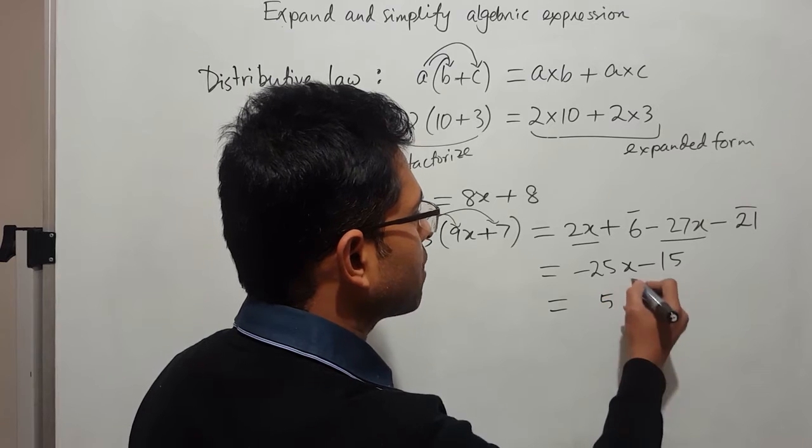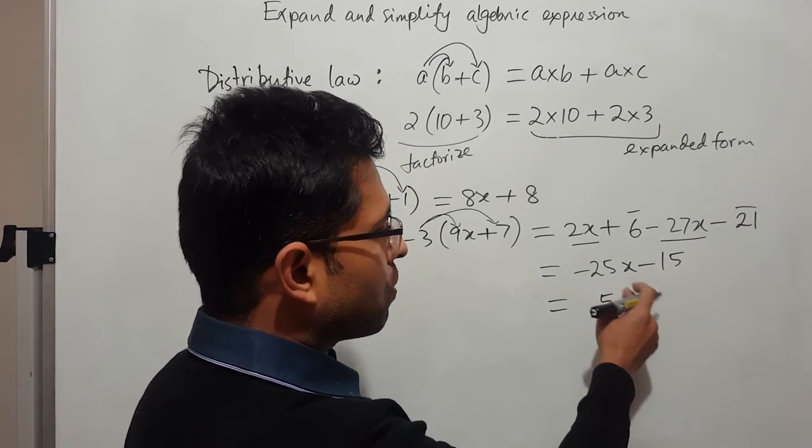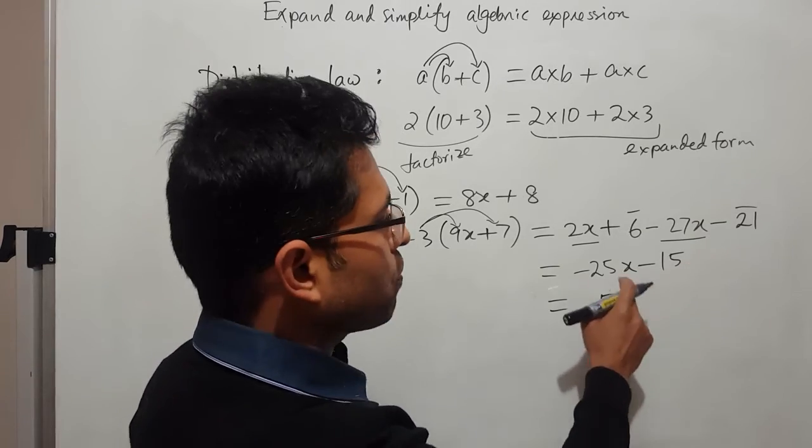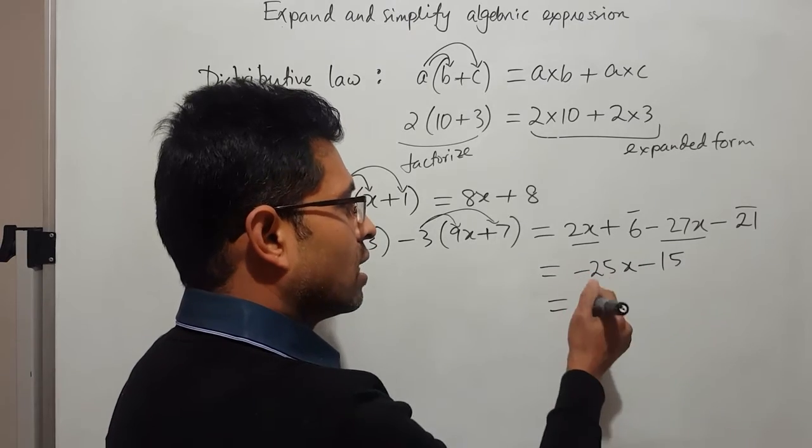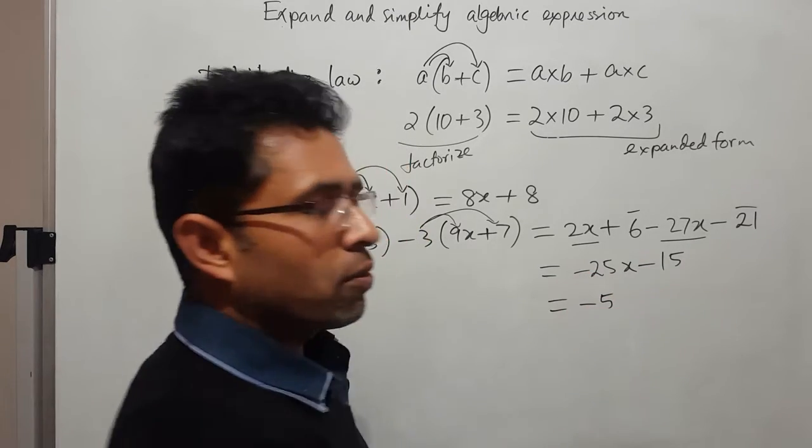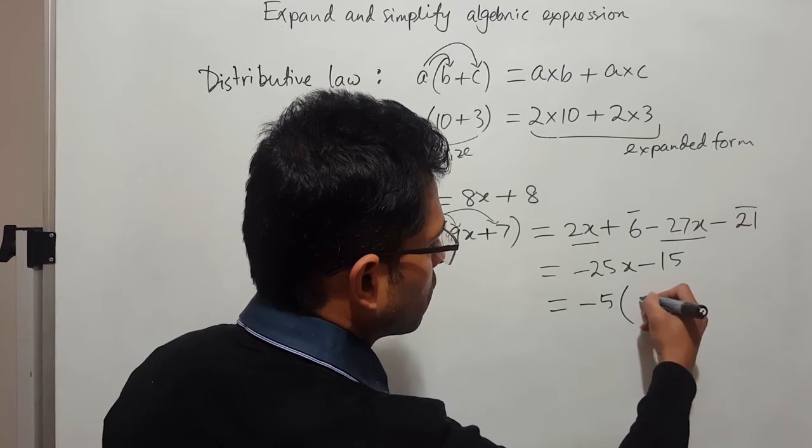But there is not more than that. Any number more than that cannot divide both. So 5 is the maximum number that can divide both. Another thing is when you have negative, we always prefer that negative also taking as a factor out, so then inside will be all positive.